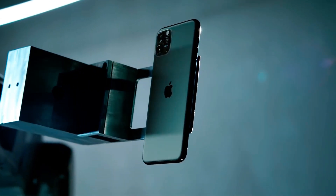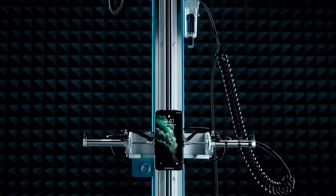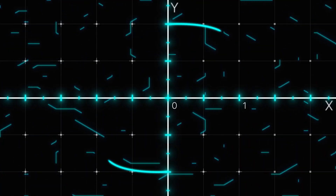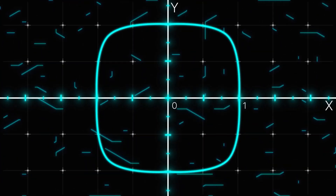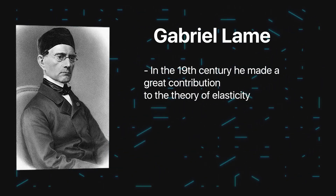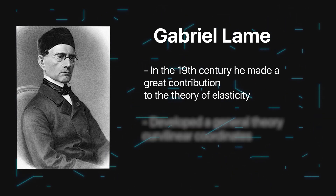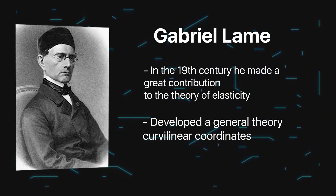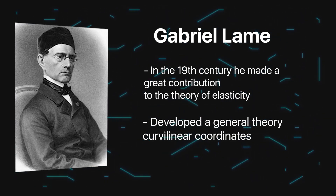Apple products often turn out to be contradictory, but not without drawbacks. But I think no one will argue that in terms of design, Apple is probably the most copied on the market. And even the shape of the icons in iOS is not taken from thin air, but calculated mathematically. It's called a super ellipse, or a lame curve in honor of Gabriel LeMay, who in the 19th century made a great contribution to the theory of elasticity, developed a general theory of curved coordinates, and invented super ellipses. So, what is it?